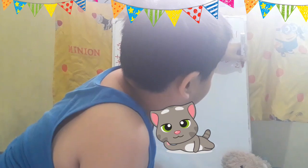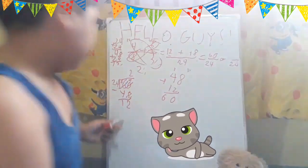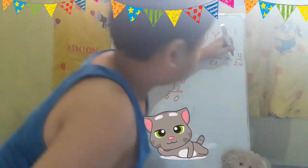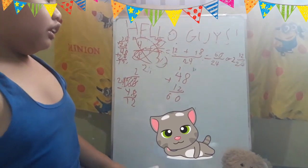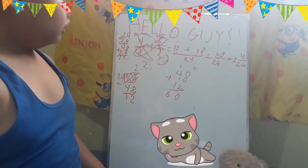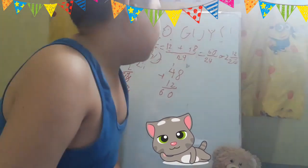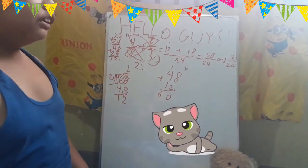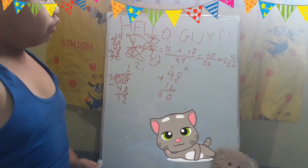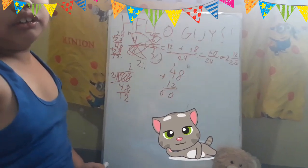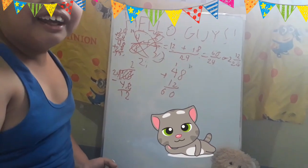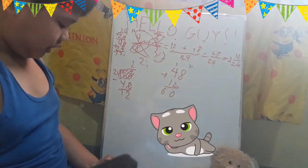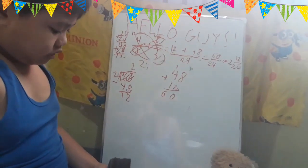Twenty-four is the denominator, twelve is the numerator, and two is the whole number. So how do you read it? The final answer is sixty over twenty-four, or two and twelve over twenty-four. Two and twelve over twenty-four.